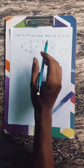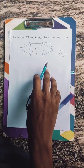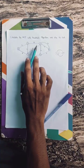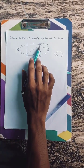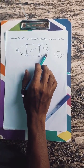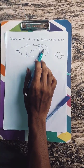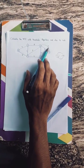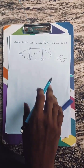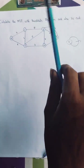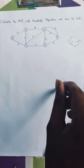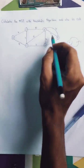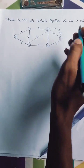Parallel edges means for any two vertices there are multiple edges drawn between them. Here in this graph we can see there are parallel edges between vertices 2 and 5. Between 2 and 5 there are 2 edges — one with cost 4 and the other with cost 7. So these two are called parallel edges.